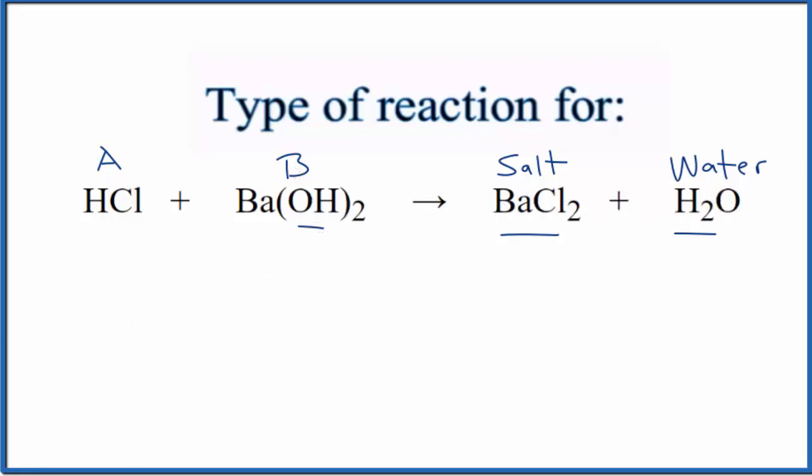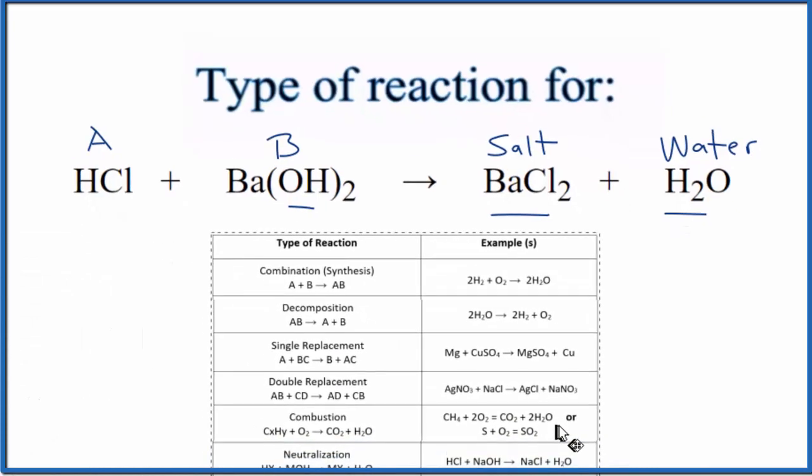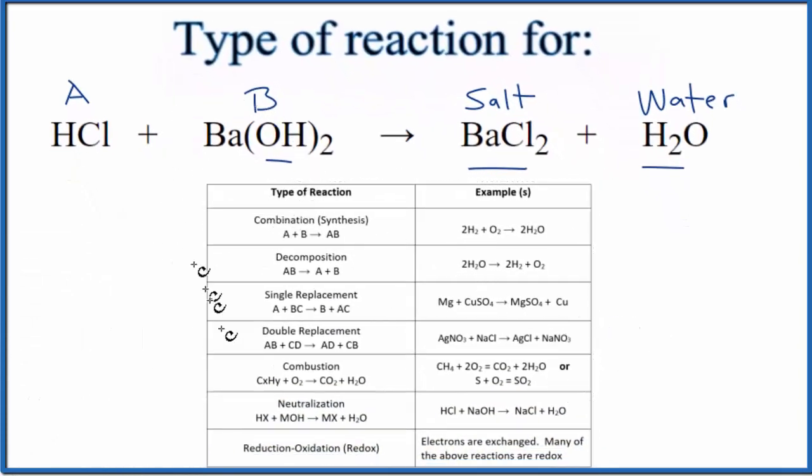Let's look at a table of common types of chemical reactions though, because we know that this is neutralization because we have HX, H is the hydrogen, X would be the chlorine, plus a metal and a hydroxide, and that gives us a salt and water. So that's neutralization. But this is also a double displacement reaction.